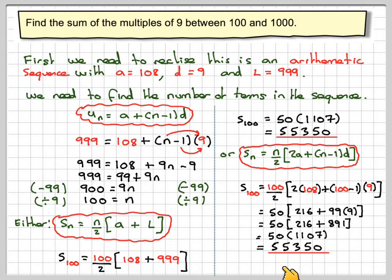And again, that gives me the same answer, 55,350. A bit more arithmetic in this example. So this has been a question to show you how to find the sum of the multiples of 9 between certain values. I hope you've understood, and I thank you very much for watching.